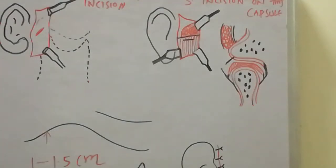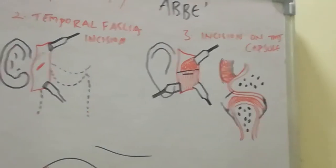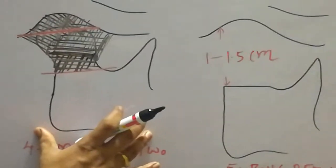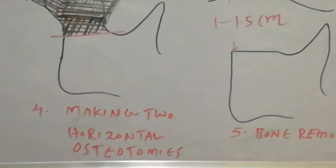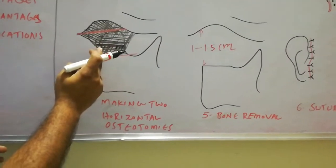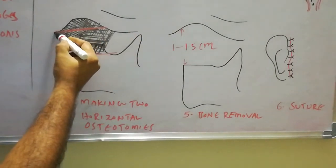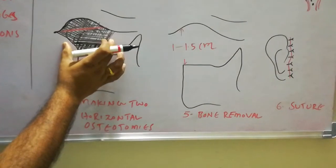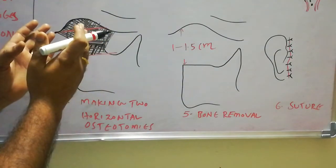Once the TMJ capsule is incised, dissect down to the mandibular bony mass. After dissection and incision of the TMJ capsule, you can see the bony anatomy: the coronoid process is visible, the condylar process is completely within the bony mass, and the zygomatic arch and glenoid fossa are identified. The complete block marking represents the ankylosed bony mass seen in the ankylosis case.